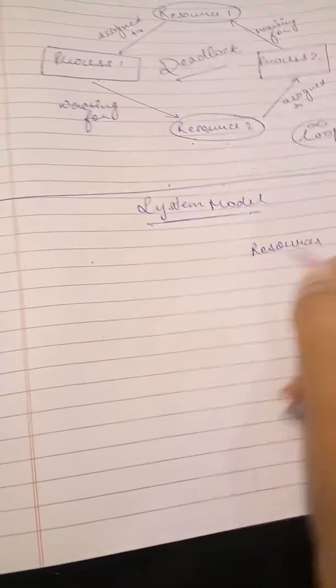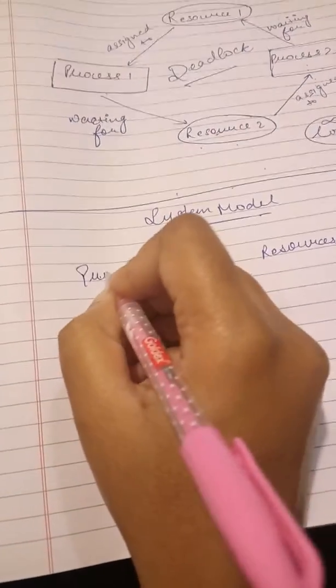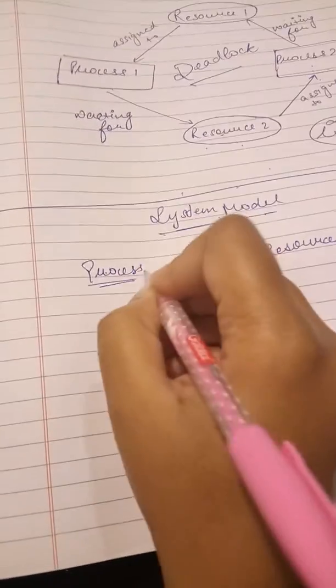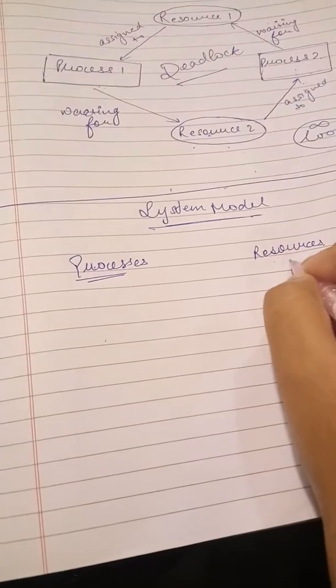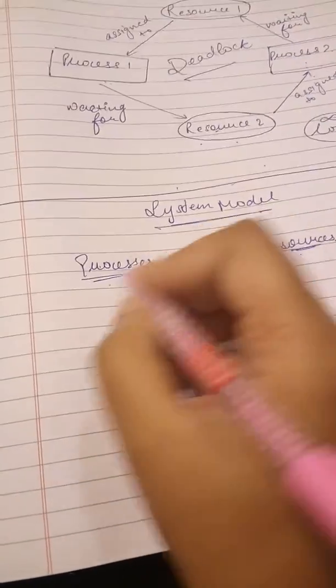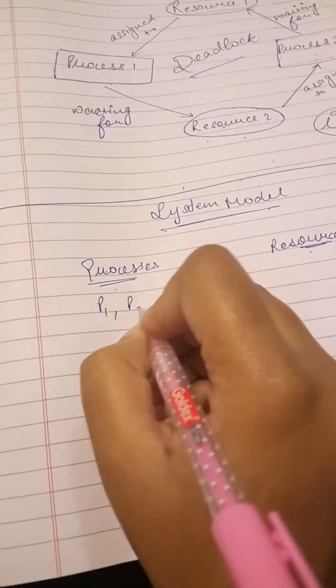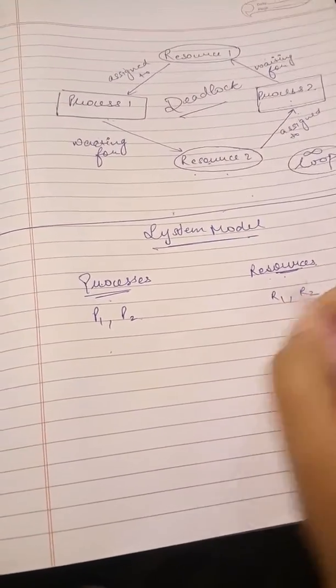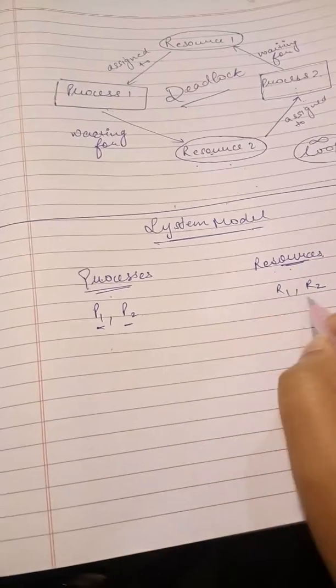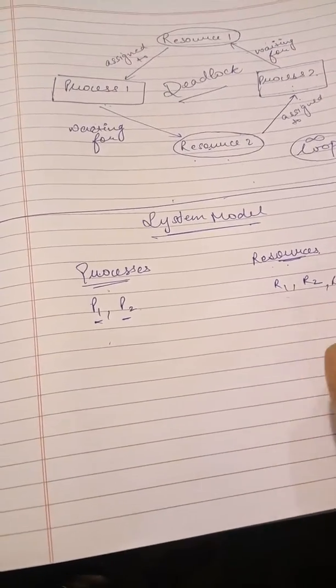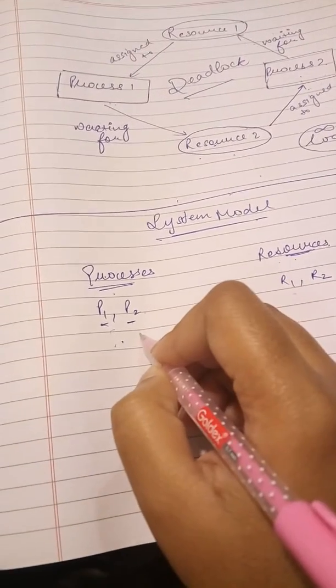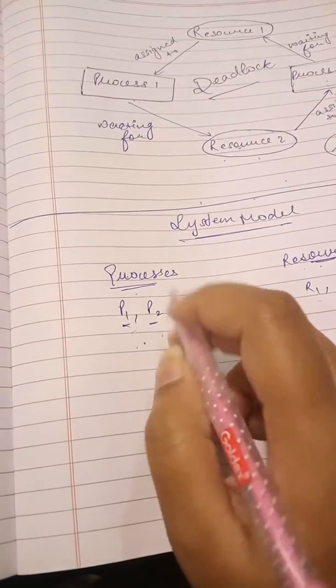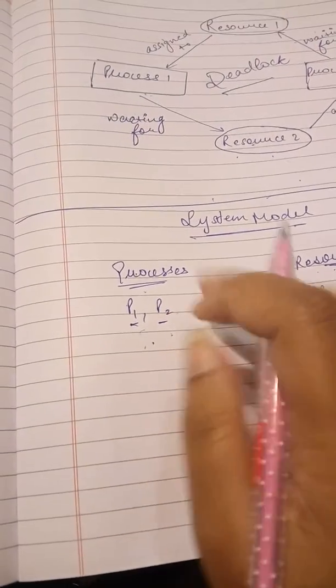There are processes and these processes require resources to complete their operation. Suppose in a system there are P1 process, P2 process, and there are R1 resource and R2 resource. So P1 and P2 must be requiring these resources to complete their operation. That is what we are saying, that a system consists of finite number of resources.